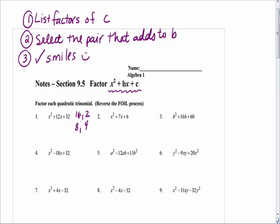When we factor a trinomial, it is always the product of two binomials. So go ahead and write two sets of parentheses. When you multiply two binomials together, what times what makes x squared? X times x. So when you multiply first term times first term, you get that x squared term. We're basically doing the reverse of FOIL. When we multiply last term times last term, that's how we get 32. So now we have a choice: we can either use 16 and 2, or we can use 8 and 4.